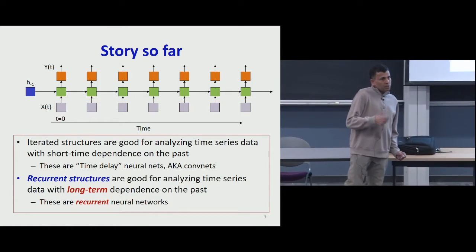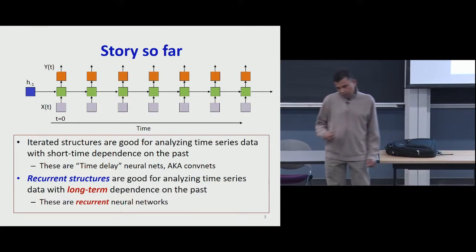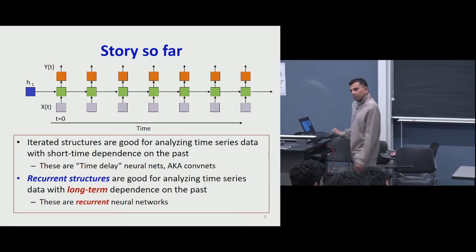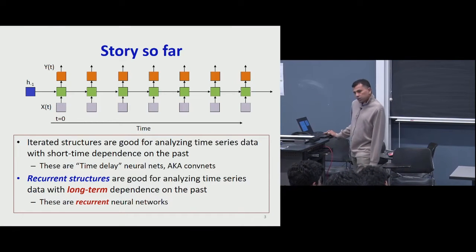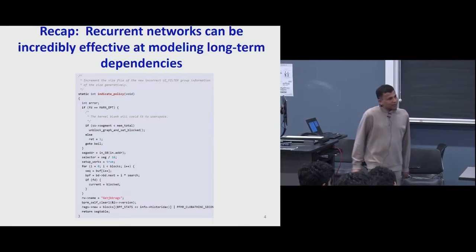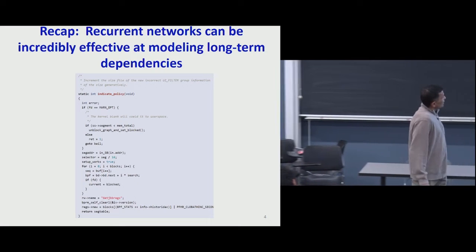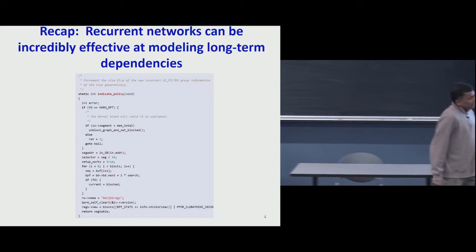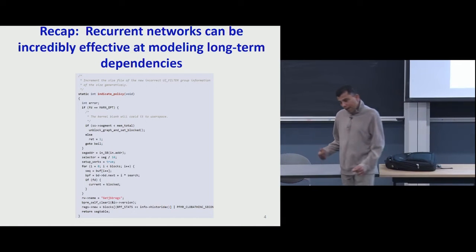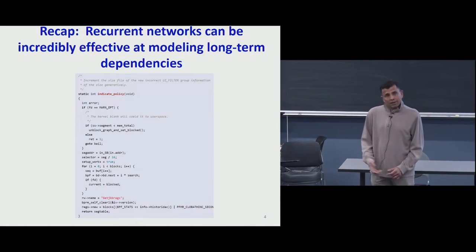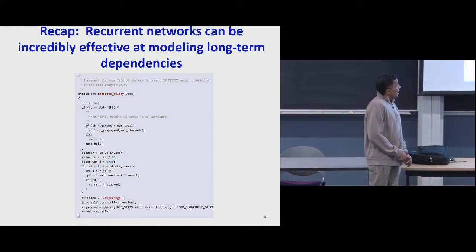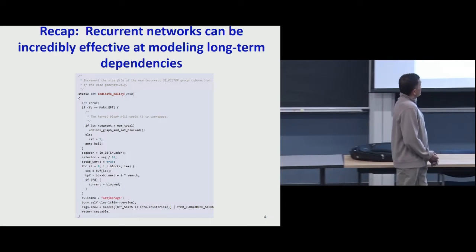Recurrent structures are self-referential — they consider their own past hidden states or outputs in order to compute the output at the current time. We saw an example of something that could be done by a recurrent network. When we have a neural network with such a recurrence, we call it a recurrent neural network. We saw that recurrent neural networks can be incredibly effective at modeling long-term dependencies.